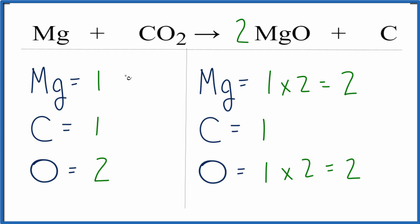Now we have two magnesiums. We need to have two on this side as well. And 1 times 2, that gives me 2. So I'm going to put a coefficient of 2 here. 1 times the 2, that gives me 2.